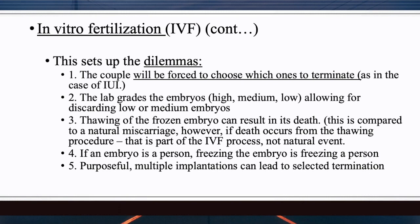Dilemma three: thawing of a frozen embryo can result in its death, which some compare to a natural miscarriage. However, a natural miscarriage is a natural occurrence in pregnancy, whereas death from the thawing procedure is not a natural event — it was initiated by man to thaw a frozen embryo for implantation. If it results in death, man's actions caused the death of that embryo, so it is not a natural event.